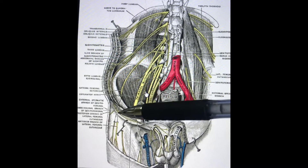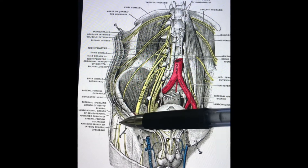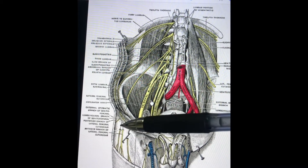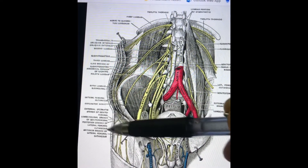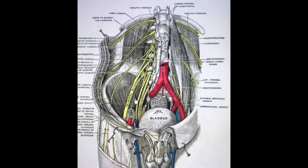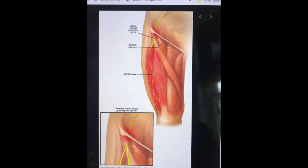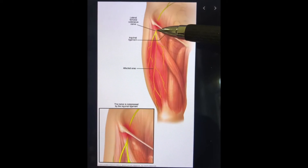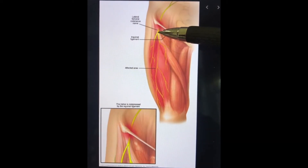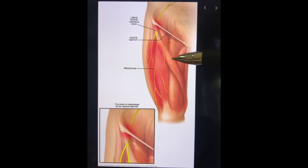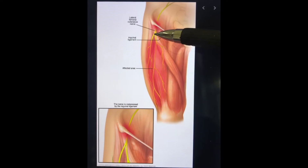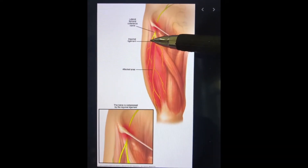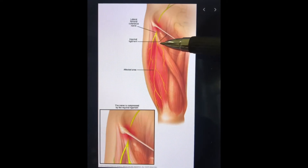After exiting the pelvis, the nerve usually travels on top of the sartorius for a short distance before continuing distally between the sartorius and the tensor fascia latae. While it can be variable, you can see how the lateral femoral cutaneous nerve spends a short amount of time on top of the sartorius muscle and then continues distally between the sartorius and the TFL.